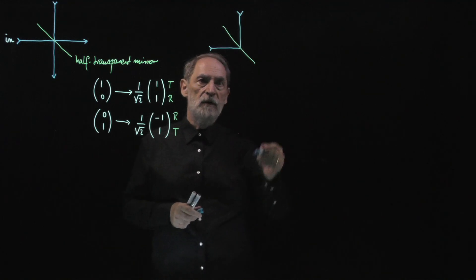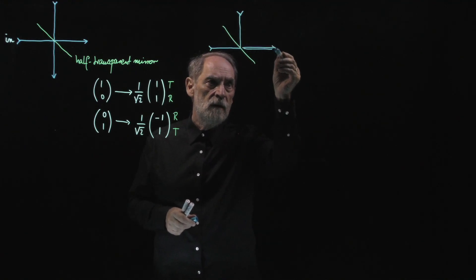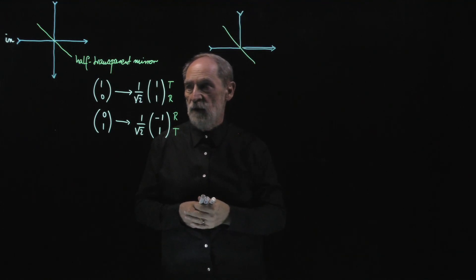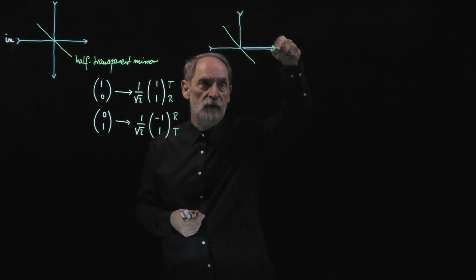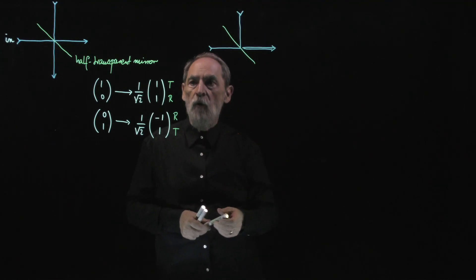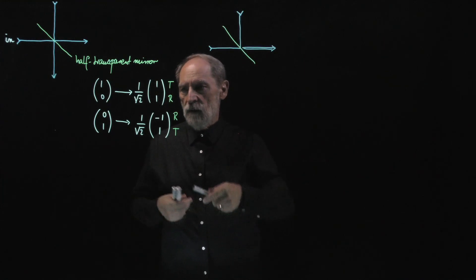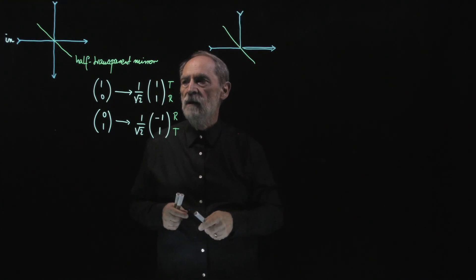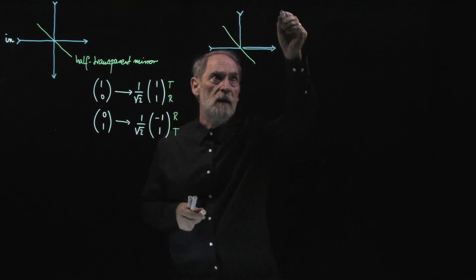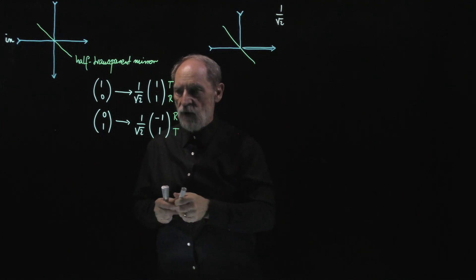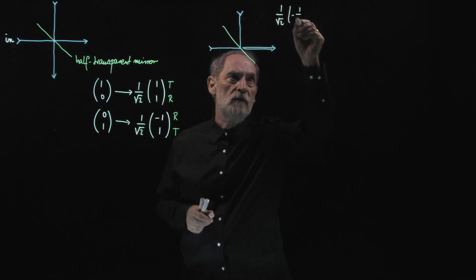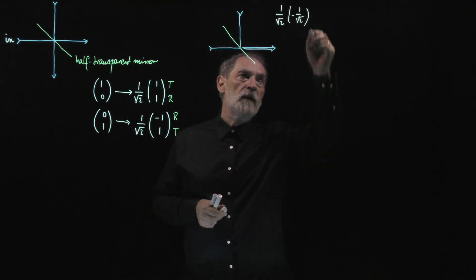One possible situation is that both photons travel to the right at the end. One photon is transmitted and the other is reflected. The overall amplitude for this process is obtained by multiplying the individual amplitudes: the photon arriving from the left is transmitted with amplitude 1 over square root of 2, and the photon arriving from the top is reflected with amplitude minus 1 over square root of 2, giving a product of minus one half.